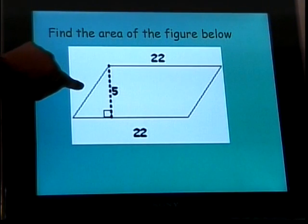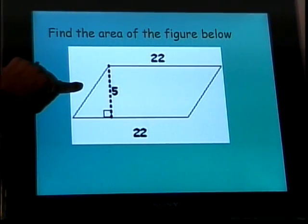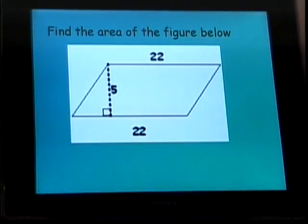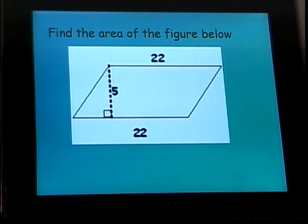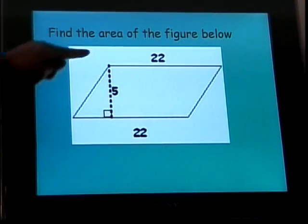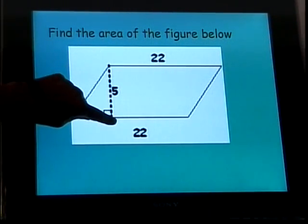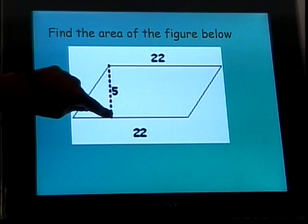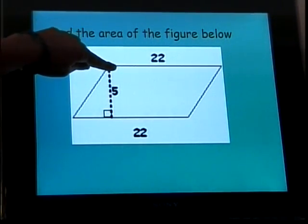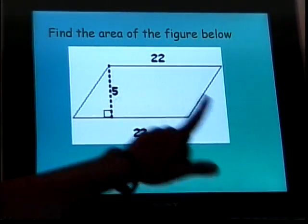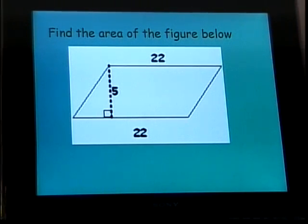For the next example, we find the area of a parallelogram. Remember, a parallelogram has 4 sides with opposite sides parallel. The formula for its area is base times height. The base is 22 across the bottom. The height is shown by a dotted line that runs from one side to the base, making a right angle with it. So the area is 22 times 5, which equals 110.